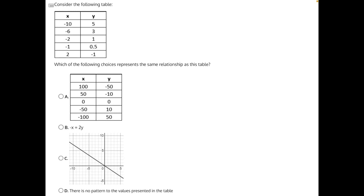Consider the following table. Which of the following choices represents the same relationship as this table? Let's start by looking at answer choices B and C. With C, we can plot points from our table to see if they match, and with answer choice B, we just have to do a quick rearrangement. So we can quickly eliminate these or find our correct answer.